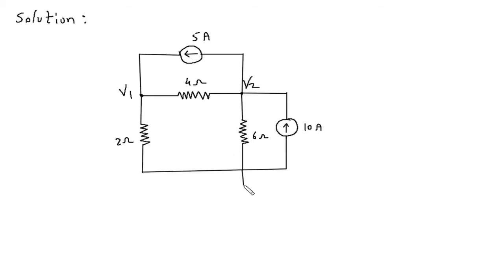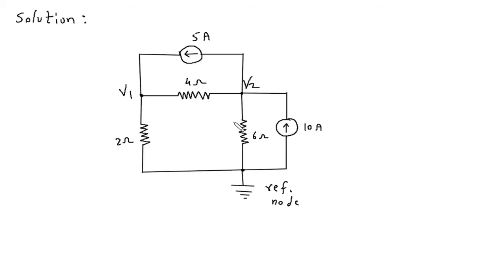Now let us say this is the reference node. All the currents are towards the reference node. Let us say this is current I1, this is I2, and this is I3. All the currents are towards the reference node.